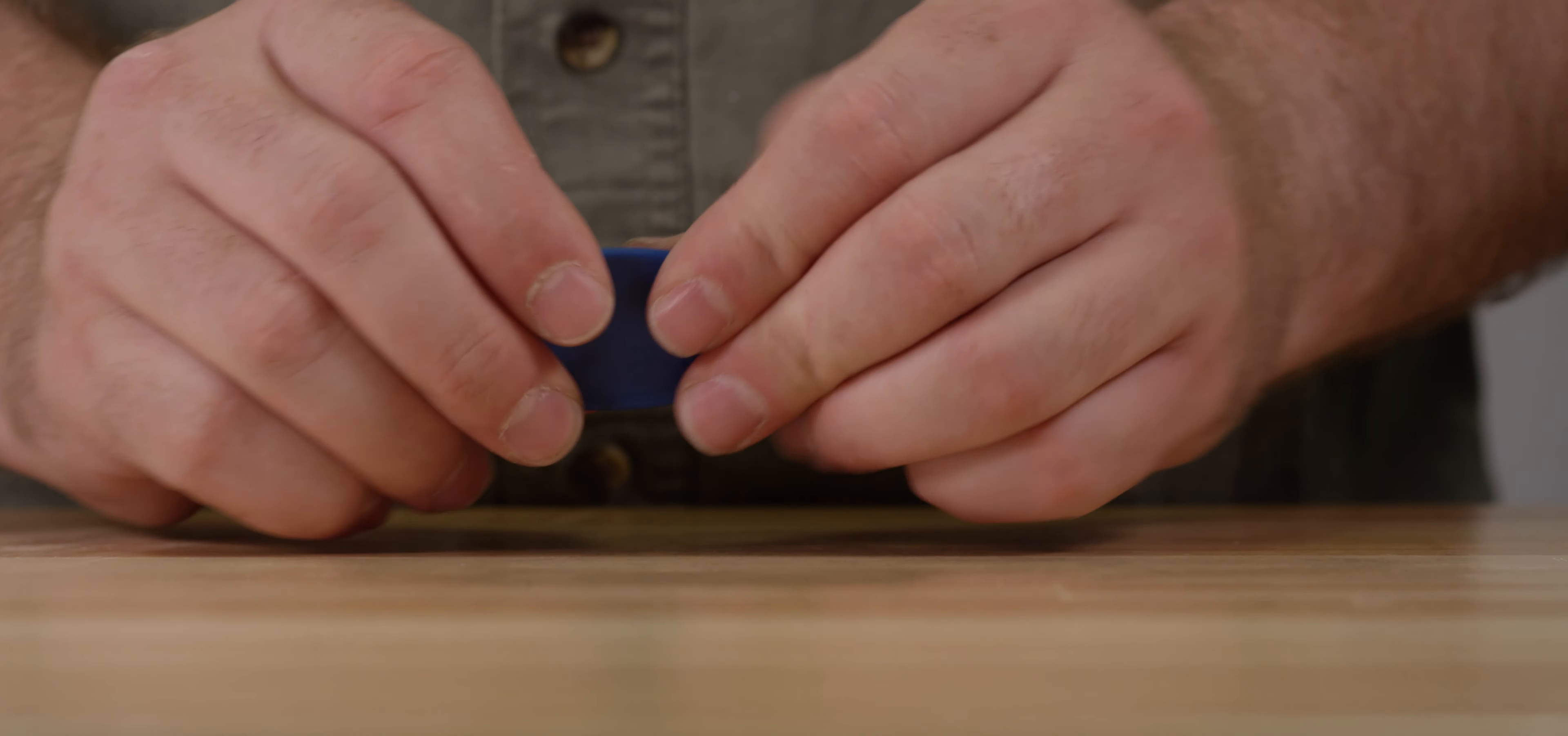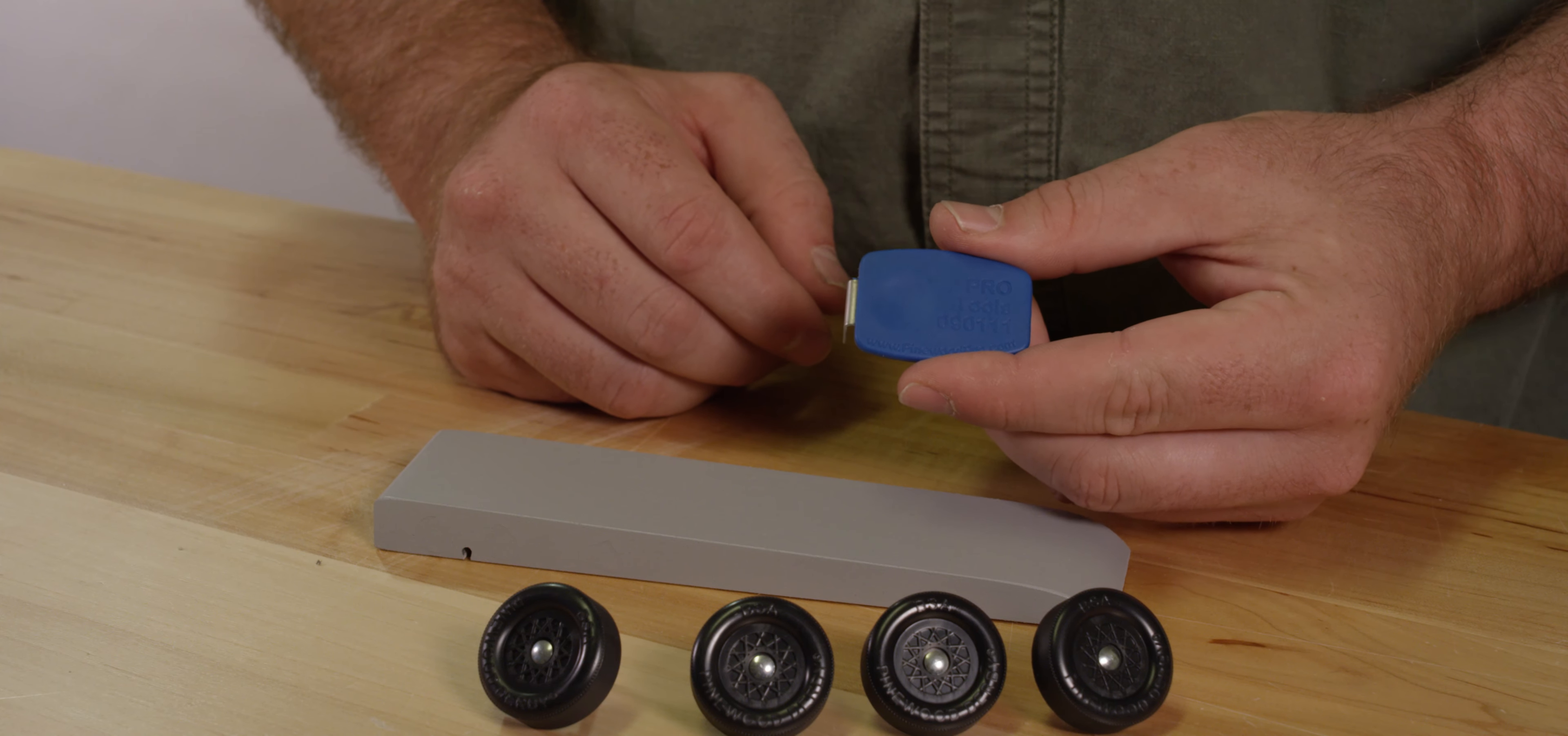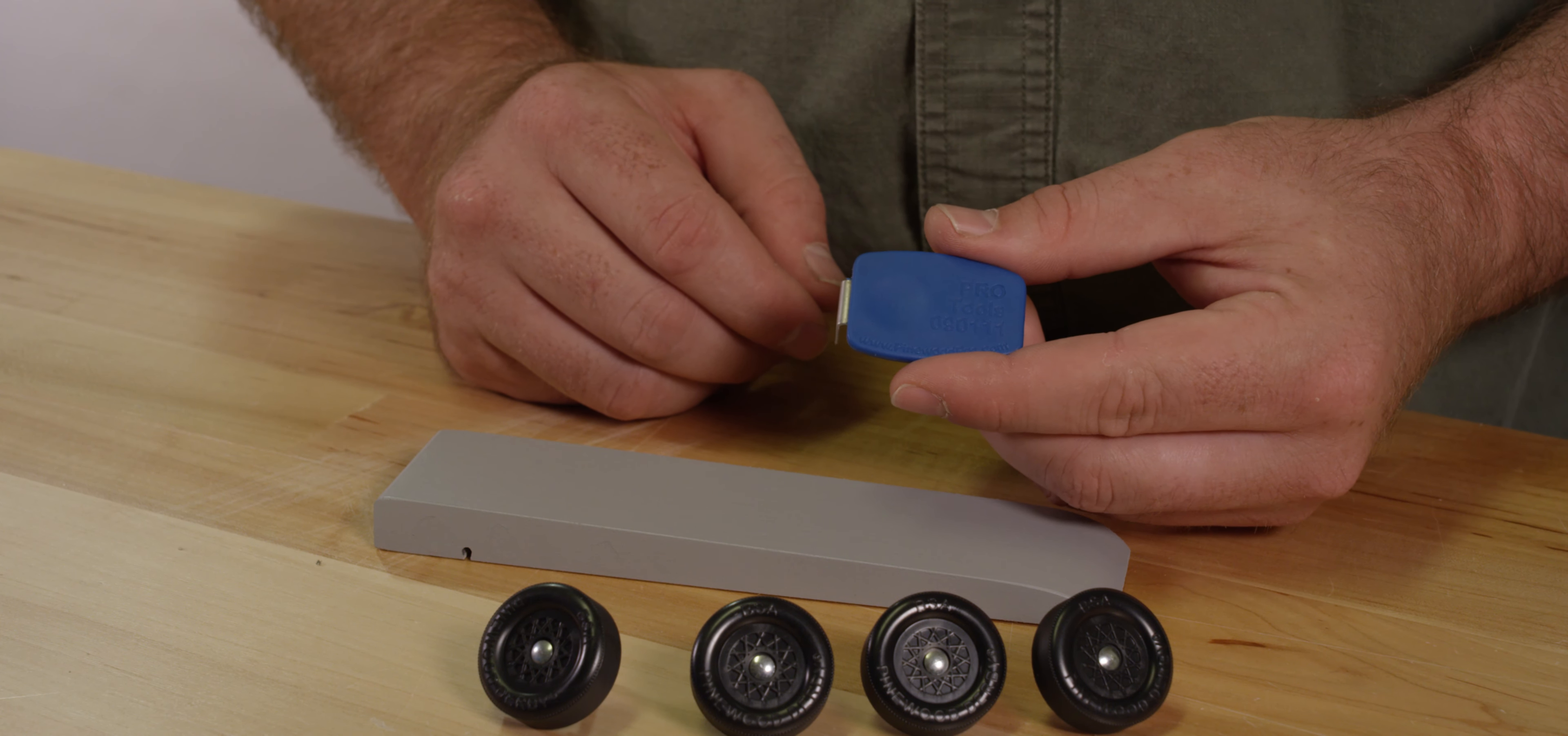The Pro Axle Guide is made of a sturdy nylon plastic so it is strong. Plastic is the perfect material because it will not scratch your axles when you insert them.